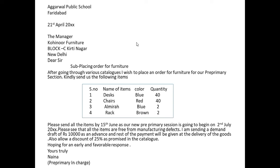The first thing you write is your self-address: Agrawal Public School, Faridabad. Then leave a space of one line and mention the date, for example 21st April, year. Then leaving one line space, write the address of the addressee — the manager, Kohinur Furniture, Block C, Kirti Nagar, New Delhi, as given in the question. Then the salutation: Dear Sir. Then the subject: placing order for furniture, mentioned in three to four words.